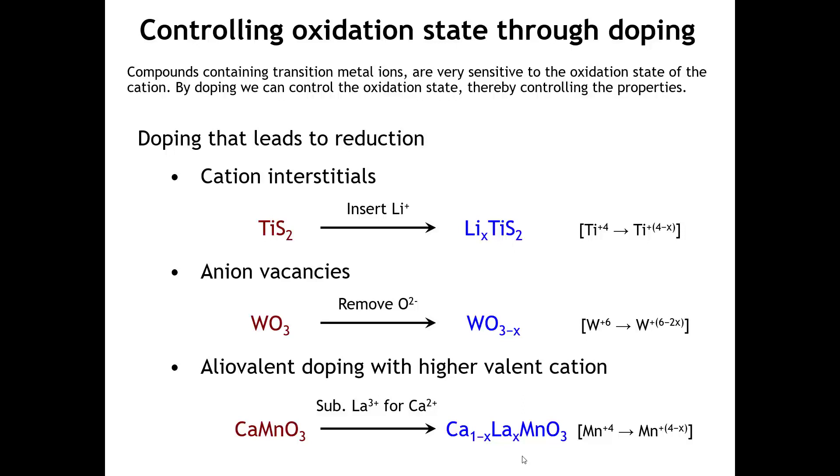We can also affect reduction by removing anions. Tungsten trioxide is a pale yellow semiconductor, but if you introduce oxygen ion vacancies, you reduce the tungsten from plus 6 to something lower, typically intermediate between plus 5 and plus 6, and that leads to a family of compounds called bronzes. You get conductivity, colors like blue and black—they're quite interesting compounds.